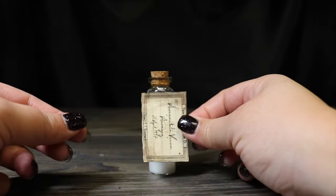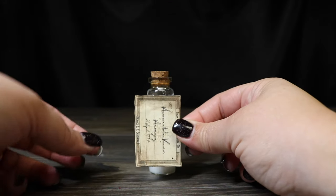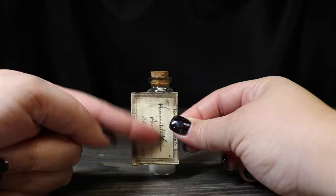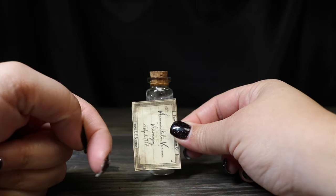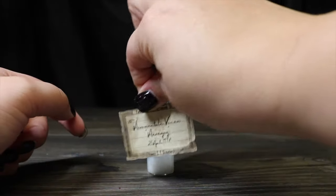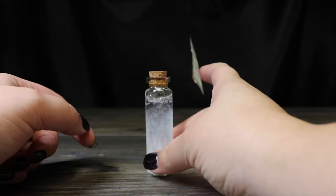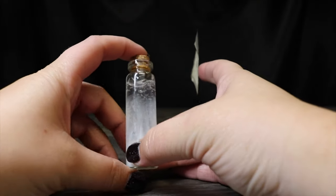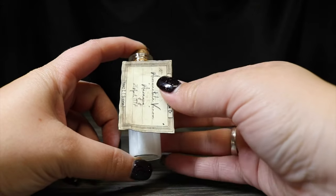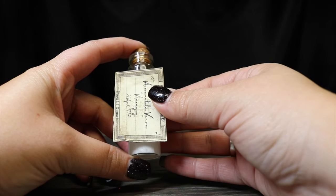And I'm actually going to place the label this direction this time because I feel like Slughorn may have wanted to just quickly see that it was acromantula venom and not necessarily have to go all the way around the bottle. You can stick yours on however you may like, but I wanted something that was a little different, and I feel like it would be something that Slughorn would do.